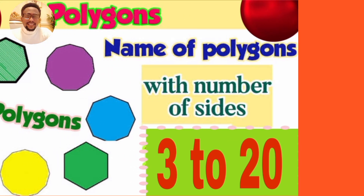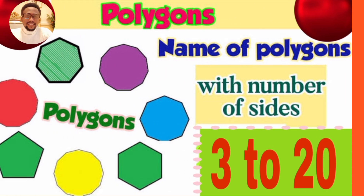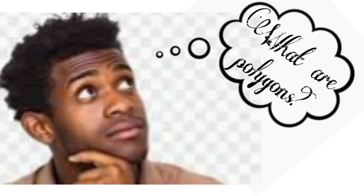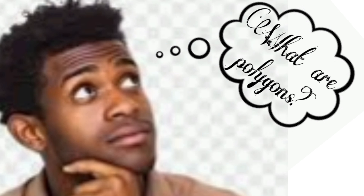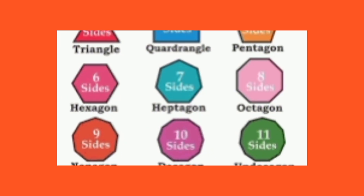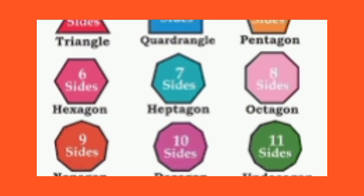You are welcome once again to this beautiful channel where learning unfolds at its best. If I may ask, how well do you know your polygons? To begin with, polygons are planar figures bounded by edges that are all straight lines. Today, we will be looking at the special names of polygons with number of sides from 3 to 20.